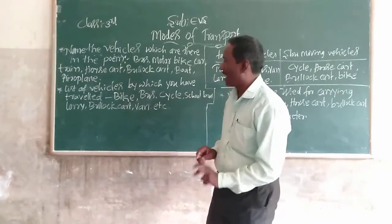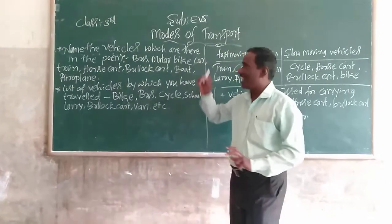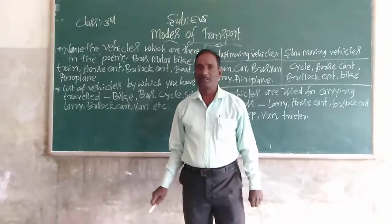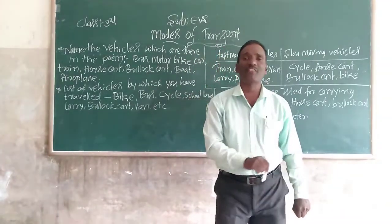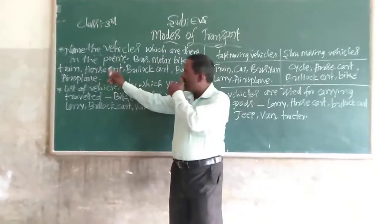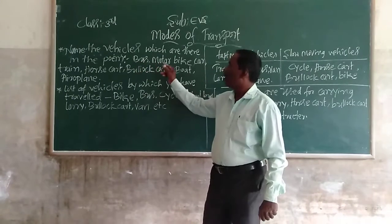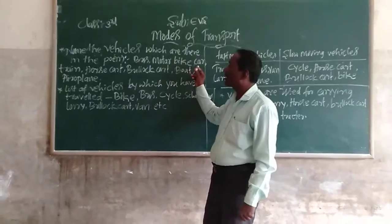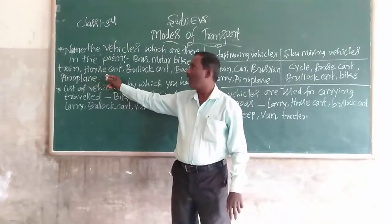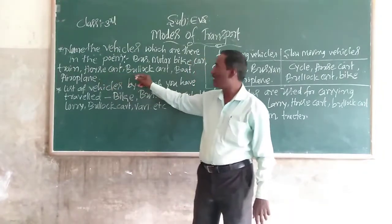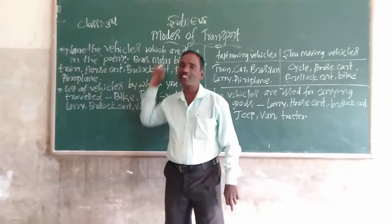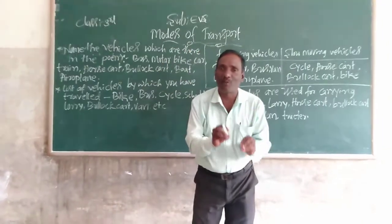Students, in this lesson name the vehicles which are there in the poem. We have identified the vehicle names in this poem: bus, motorbike, car, train, auto, bullock cart, boat, aeroplane. These are the vehicles in the poem.